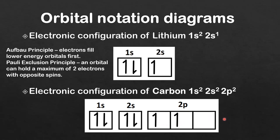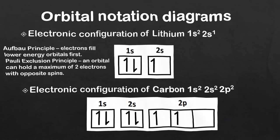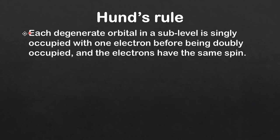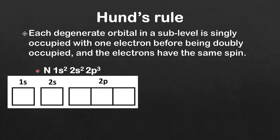This is known as Hund's rule. Hund's rule states that each degenerate orbital in a sublevel is singly occupied with one electron before being doubly occupied, and the electrons have the same spin. What does that actually mean? Let's look at an example.